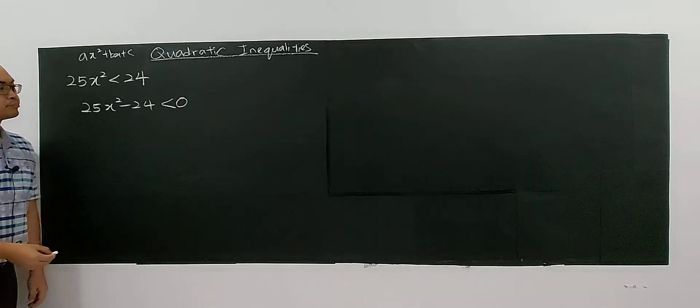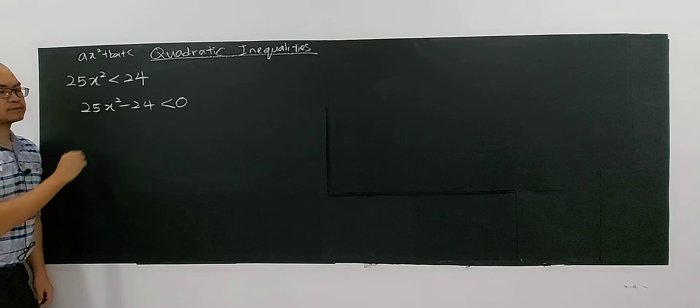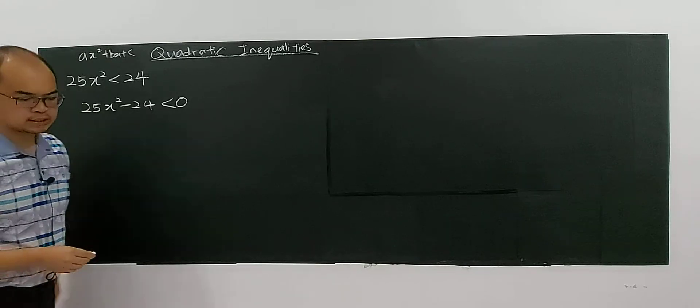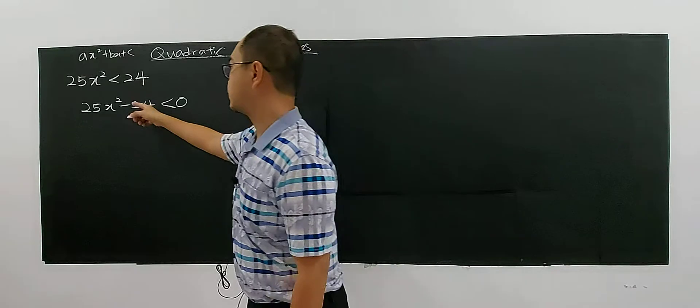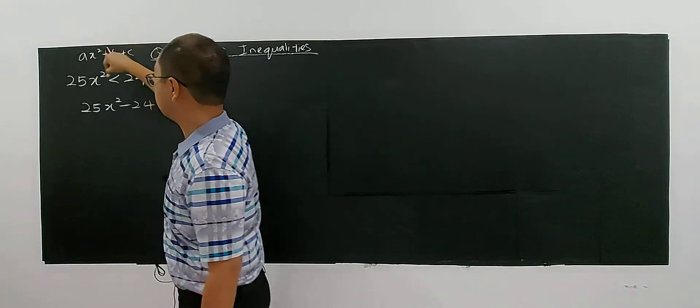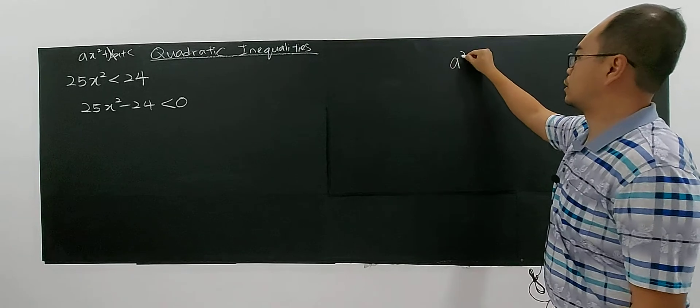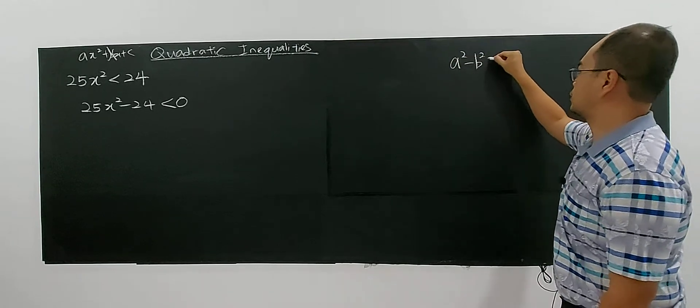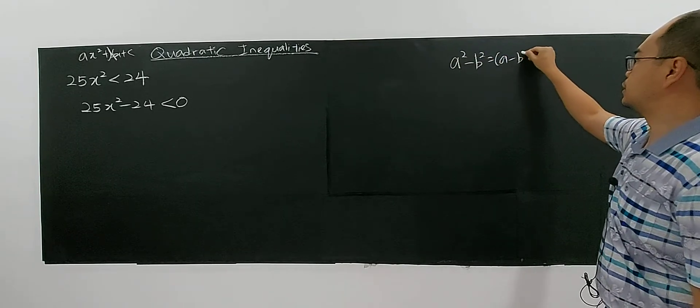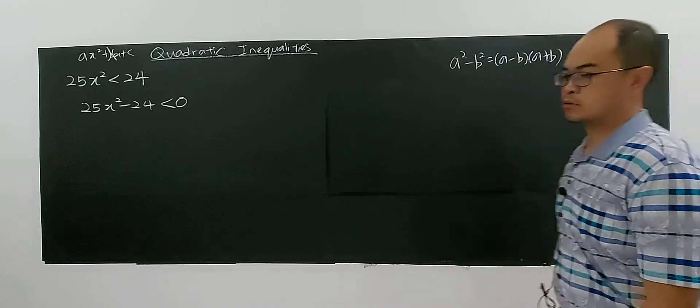Now, you have to factorize this. You can use the method of difference here. Because there are no bx here. There are no bx here. So you can try to use this square of difference, which is a minus b, a plus b.